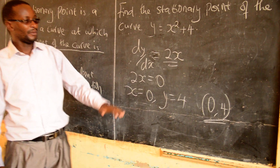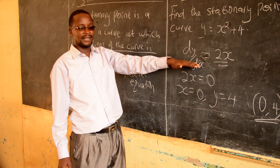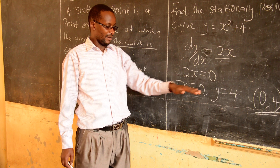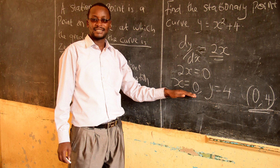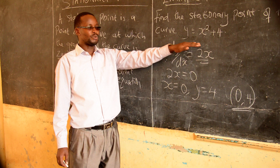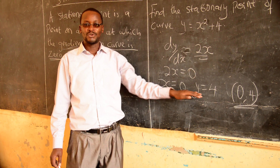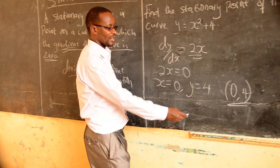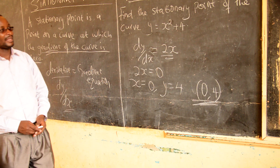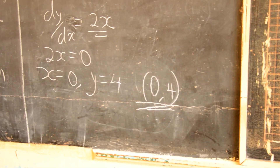So these are the coordinates of the stationary point. The procedure is simple: you are given the curve, differentiate the curve, equate the derivative to zero, from there you get the value of x, then substitute the value of x in the original equation to get the value for y. When you have the two values, you write them as the coordinates. So this is the turning point for that curve, y equals x squared plus four.